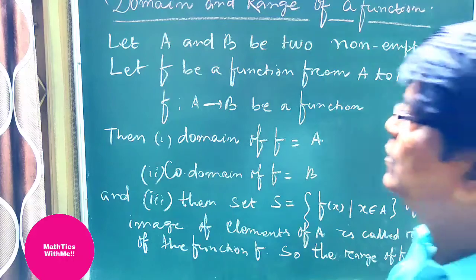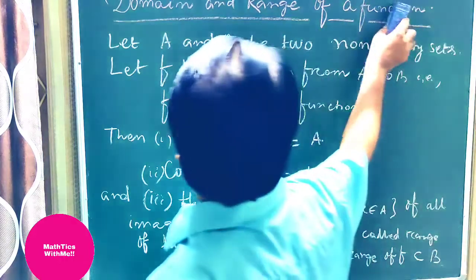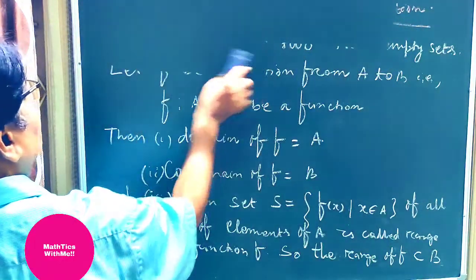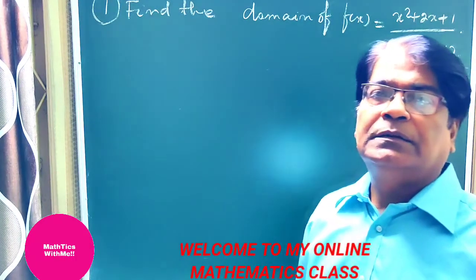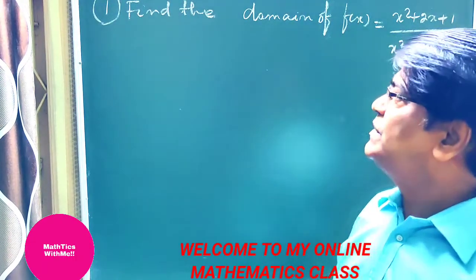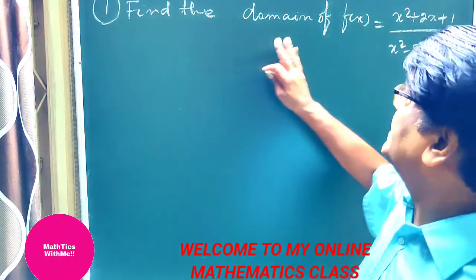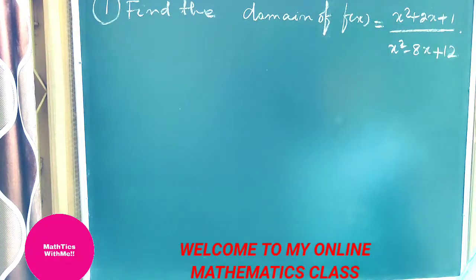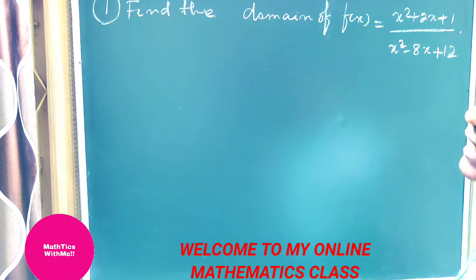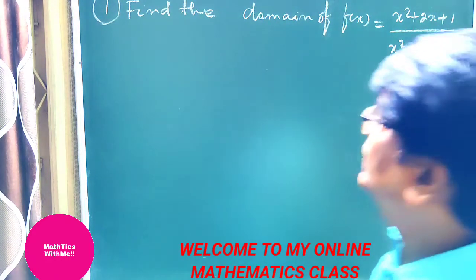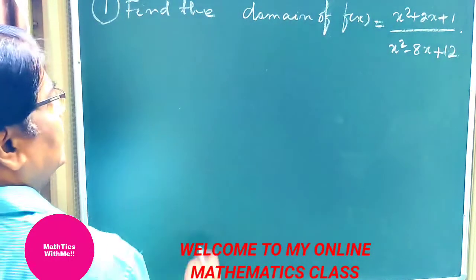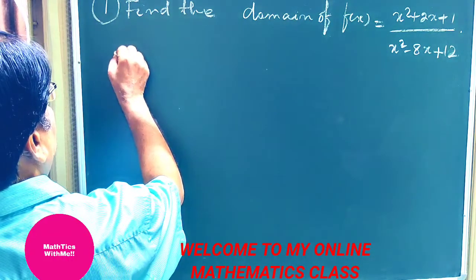Our first question is: find the domain of f(x) = (x² + 2x + 1) / (x² - 8x + 12). We have to find the domain. Solution: